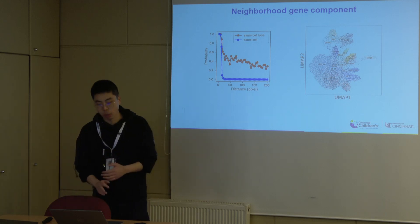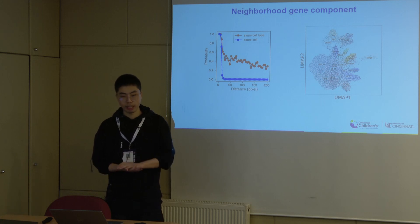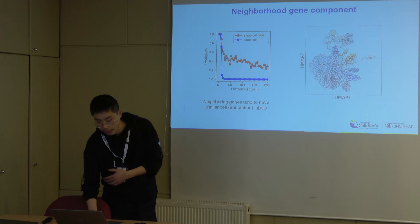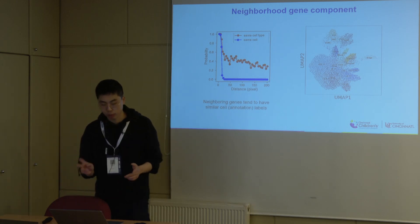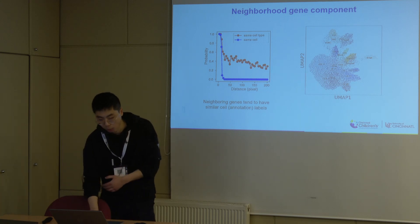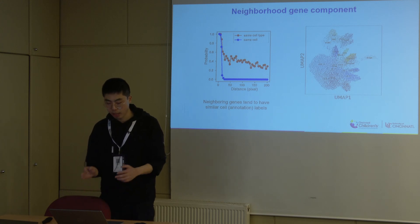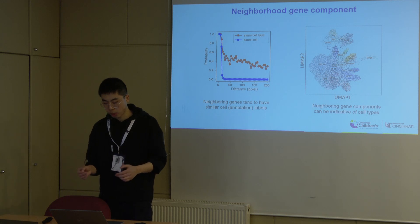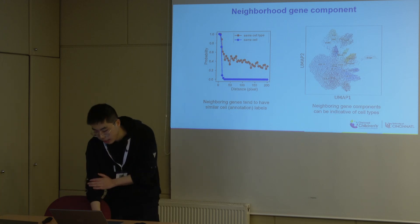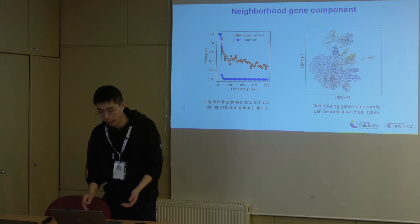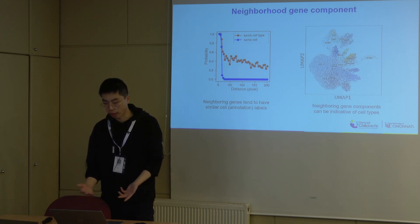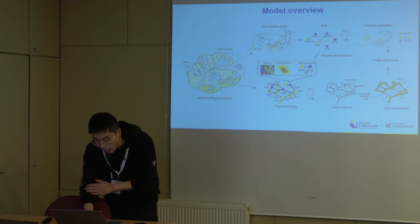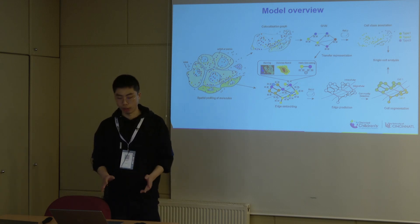Here is some background on a proof-of-concept experiment we did. We looked at the neighborhood of genes projected onto the same slides and assumed that neighboring genes have similar cell types and labels. In the plot we drew, as the distance between two dots gets further, you can see the probability of their labels being from the same cell or same cell type decreases. We also used neighboring gene components to do clustering similar to single cell clustering, and the annotations assigned to those components represent annotations derived from single cell analysis very similarly. With that, we developed a model called Bering.